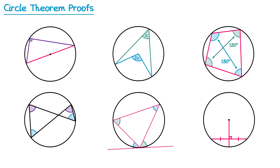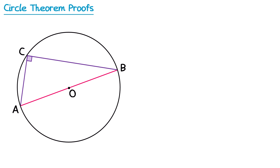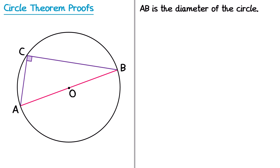We'll start with the one in the top left: the angle in a semicircle is 90 degrees. In an exam question, it could be worded as follows — AB is the diameter of the circle, which tells us it's a semicircle, and it says prove that angle ACB is 90 degrees. Many of the circle theorems in this video can actually be proved in many different ways; I'm going to go through just one proof for each, so if you see a different proof elsewhere, it may also be valid.